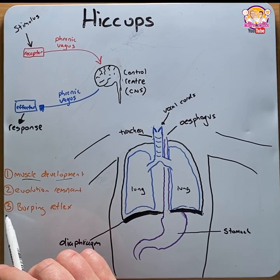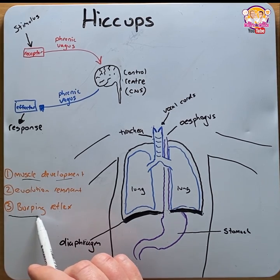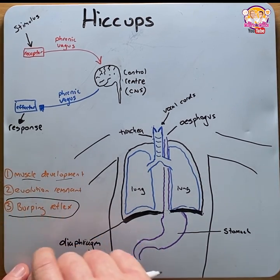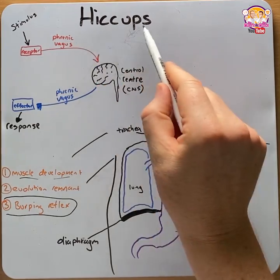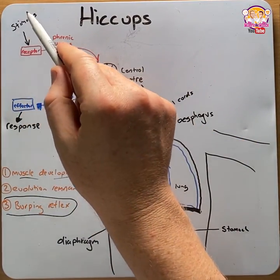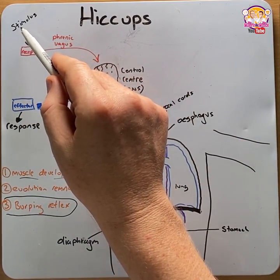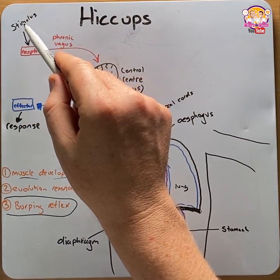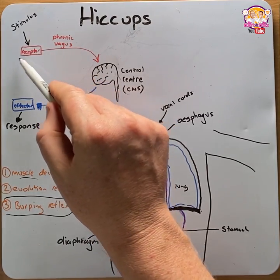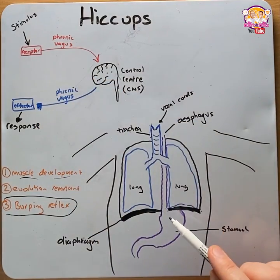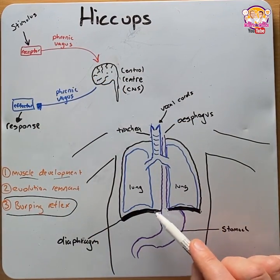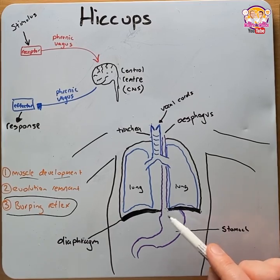And number three, which is my favourite, the burping reflex — which is what we're going to explain now. With the hiccup reflex, the most common stimuli are gastric distension, carbonated water, and eating too fast, which activates sensory receptors in the distal esophagus, the stomach wall, and the diaphragm.